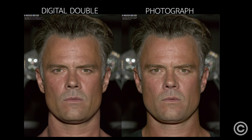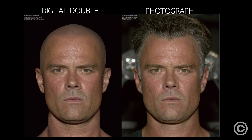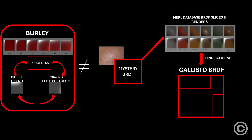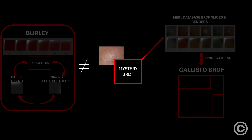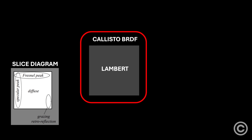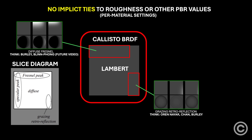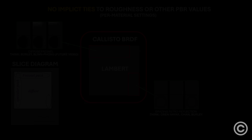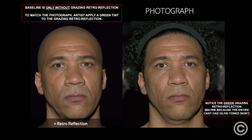The developers of the Callisto Protocol were focusing on total photorealism in human characters, and it seems they felt that Burley's implicit behavior couldn't balance the three key aspects well enough to match the unknown BRDF equivalents of human skin. Burley also doesn't express other MERL BRDF patterns that the Callisto BRDF defines. The Callisto BRDF uses Lambert as a foundation with per-material controls for grazing retroreflection, diffuse Fresnel, and even tinting of these aspects to further match MERL database BRDFs.